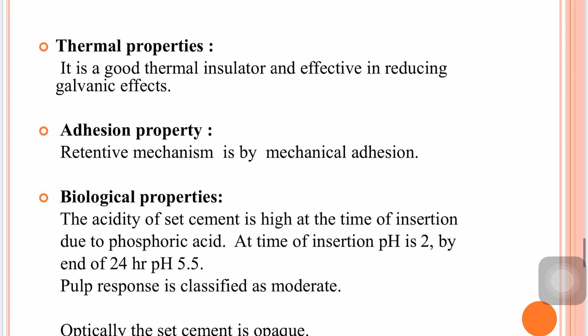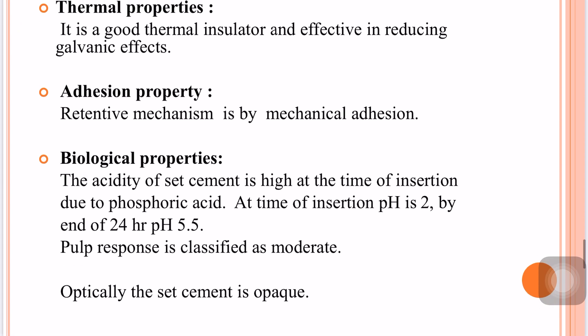Thermal properties: zinc phosphate is a good thermal insulator and is effective in reducing galvanic effects. Regarding adhesion, retention is mechanical — it does not chemically bond to tooth structure. Biologically, the pH of the set cement is high at the time of insertion due to phosphoric acid. At insertion, the pH is 2, but by the end of 24 hours it rises to about 5.5, making the pulpal response moderate.